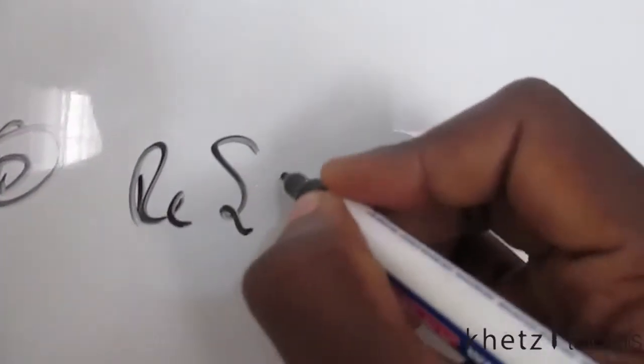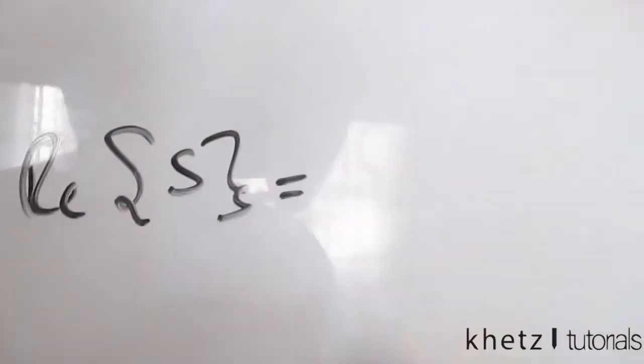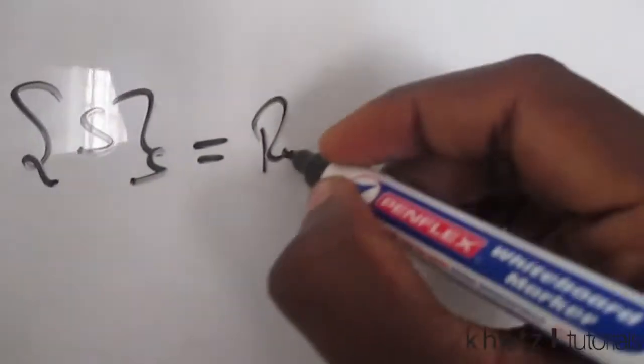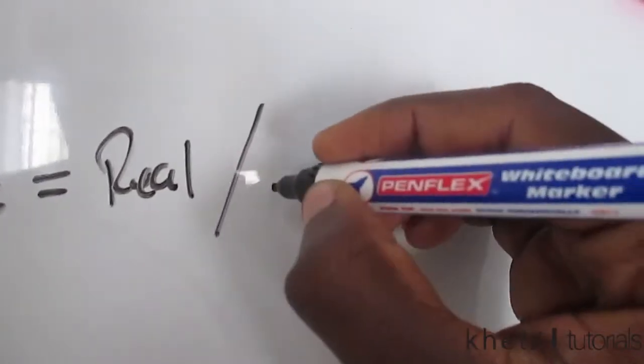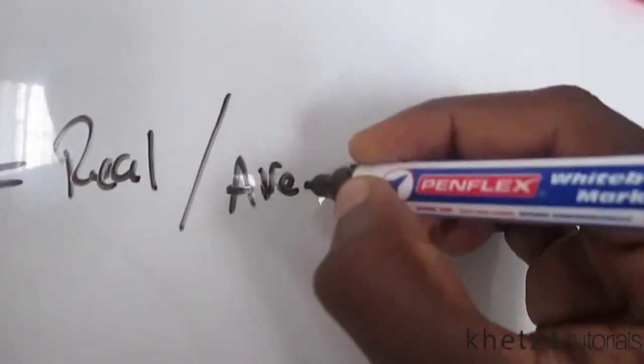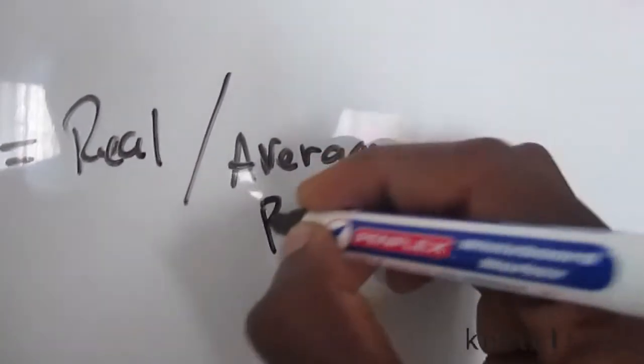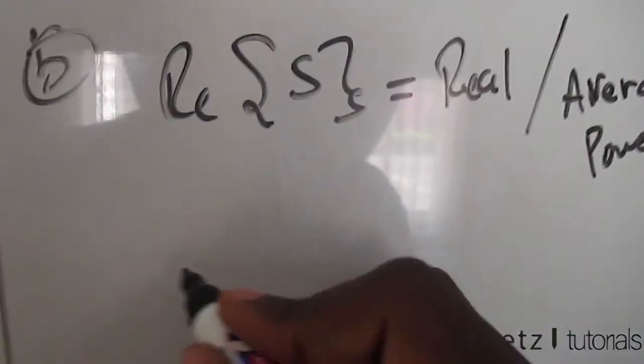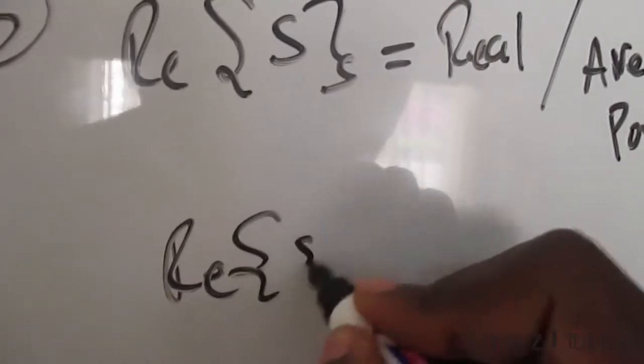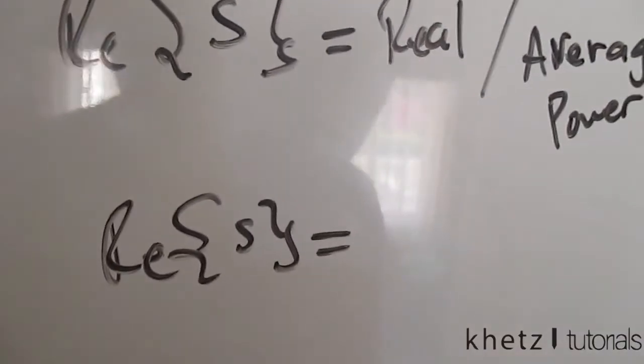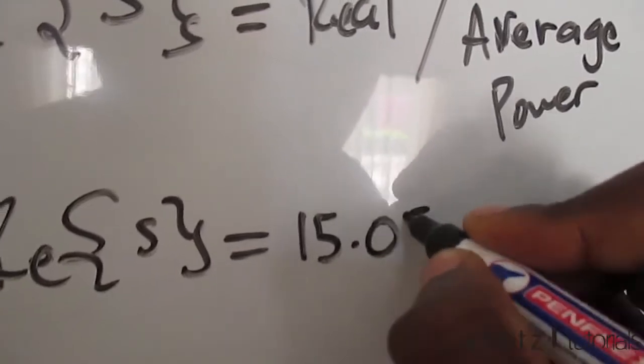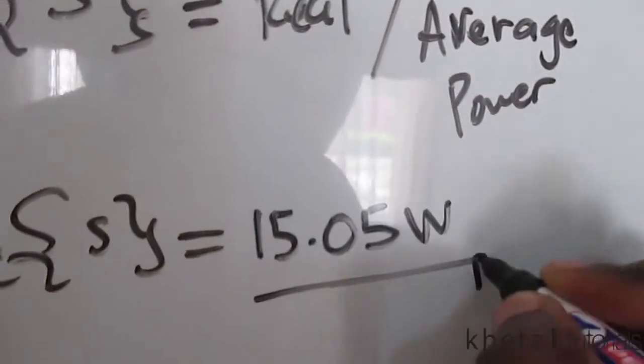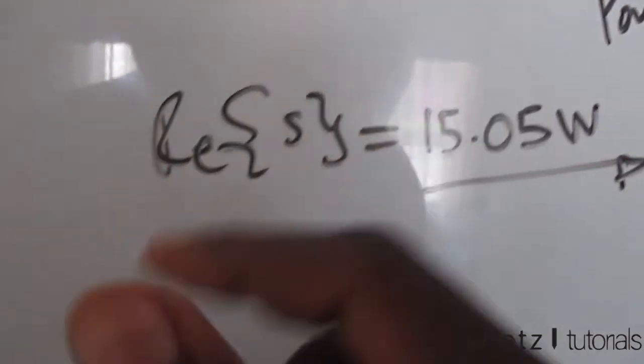And these parts form the real part and the imaginary part. Now the real part of your complex power gives you your real or your average power. So now that this question is asking us for real power, you're going to take that real part of the complex power which is 15.05, and that is in watts.